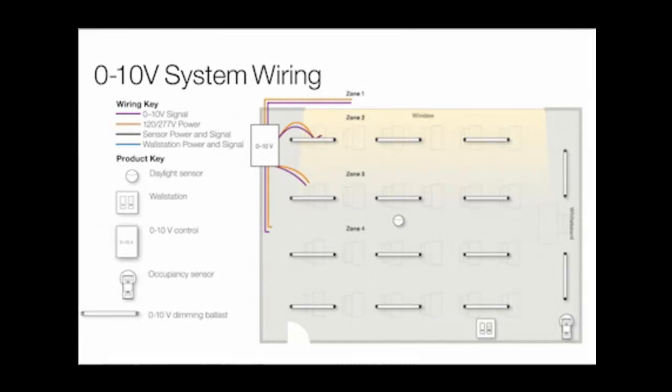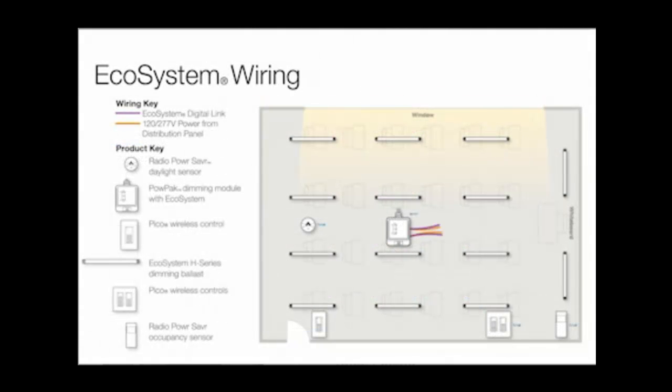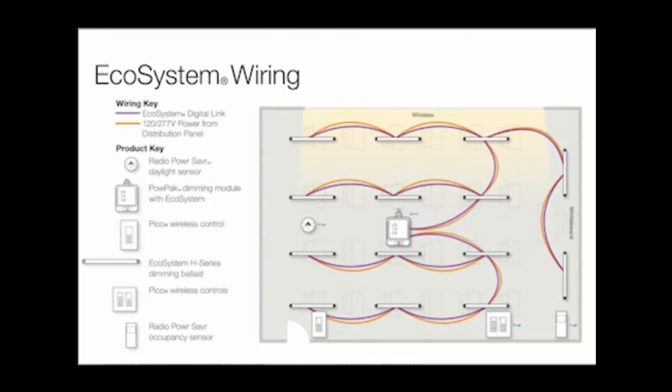0 to 10 volt dimming systems typically require home run power and control wiring for each zone, as well as additional wiring for each control and sensor in the space. The Ecosystem Digital Link makes zoning easy and flexible, eliminating the need to home run wires for each individual zone.